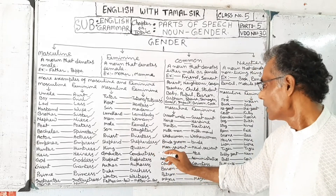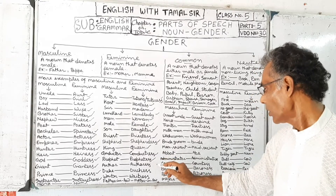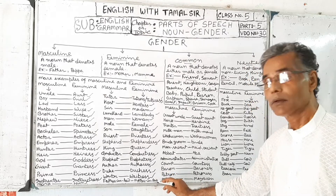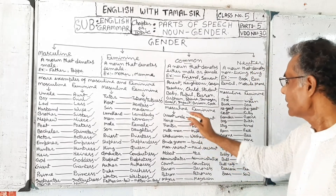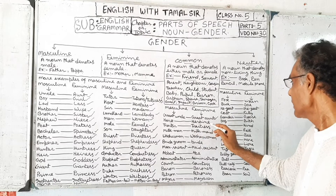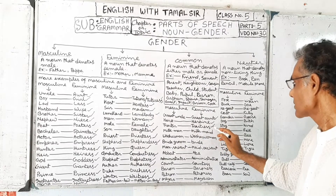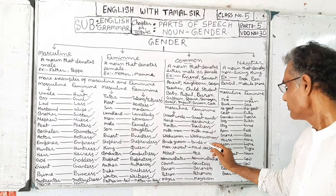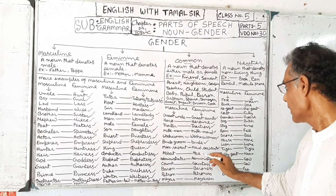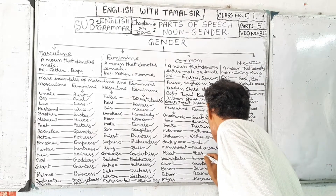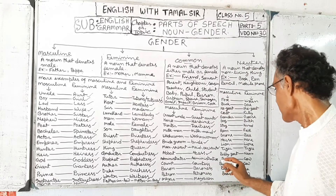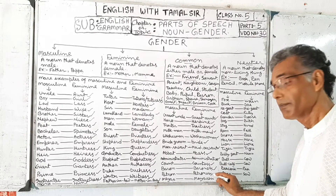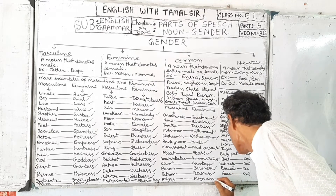More masculine and feminine pairs: king / queen, conductor / conductress, prophet / prophetess, author / authoress, duke / duchess, waiter / waitress, father-in-law / mother-in-law, great uncle / great aunt, hero / heroine, milkman / milkmaid, washerman / washerwoman, bridegroom / bride, manservant / maidservant, administrator / administratrix, count / countess, baron / baroness, patron / patroness, mayor / mayoress.